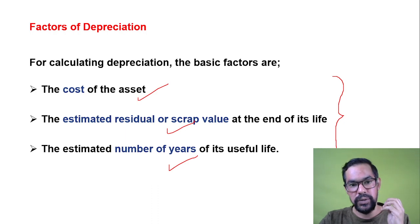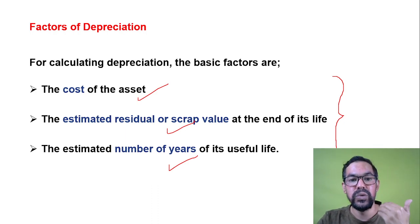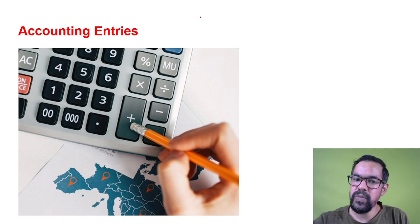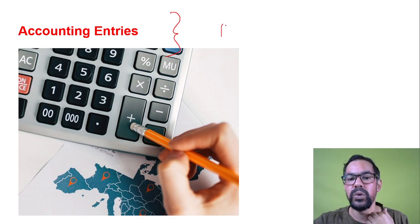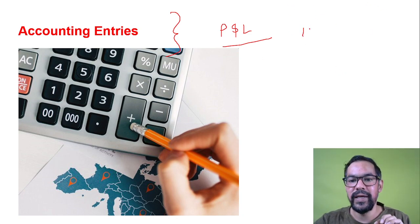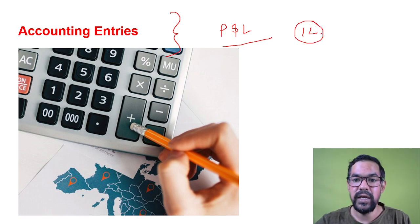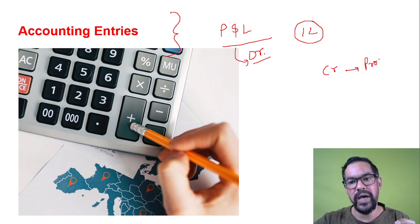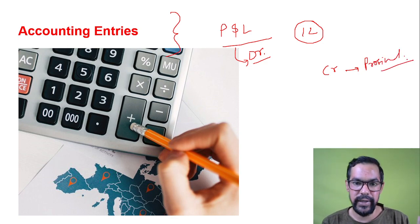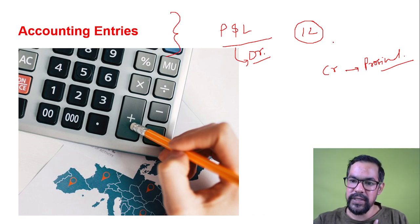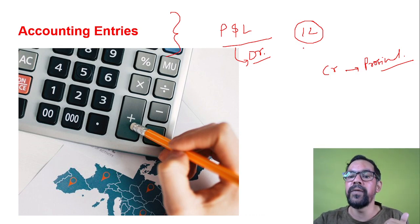For accounting entries, depreciation is managed through the P&L account. If the overall depreciation of a company is 1 lakh rupees across different assets, this 1 lakh will be debited from the P&L account and credited to a provision account. You create a provision account so that after the asset's useful life — say 10 years — you have the funds ready to replace that asset.